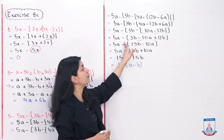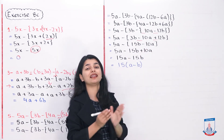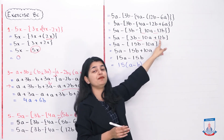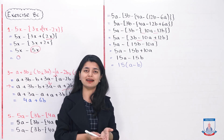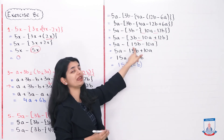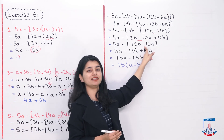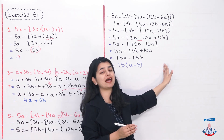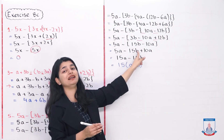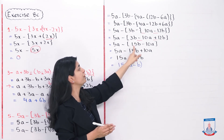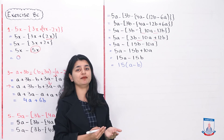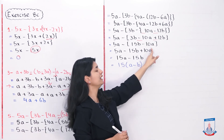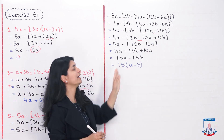Now only the outer square bracket remains. First I align the terms inside: 3b minus 10a plus 12b. Since 12b and 3b are like terms, I add them: 3b plus 12b is 15b. Minus 10a comes down as it is. So inside the bracket I have 15b minus 10a. Now I multiply by the sign outside the bracket, which changes the signs: 15b becomes minus 15b, and minus 10a becomes plus 10a. The last bracket has been opened.